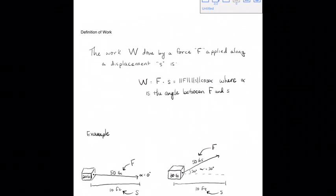The other problem I wanted to go over, also from section 4.3, is another application of vectors called work. Work occurs when a force is applied and an object is moved — the amount of movement is called displacement, denoted S. For example, if you're pushing a box along the floor, the force you apply is the force, and the distance it moves is the displacement. The work can be calculated using the formula: W = |F| × S × cos(α), where α is the angle between the force and displacement vectors.